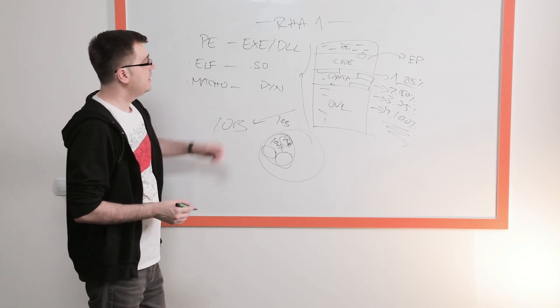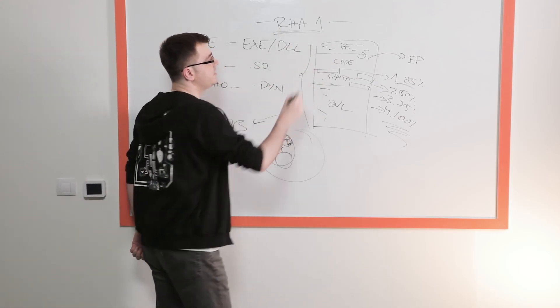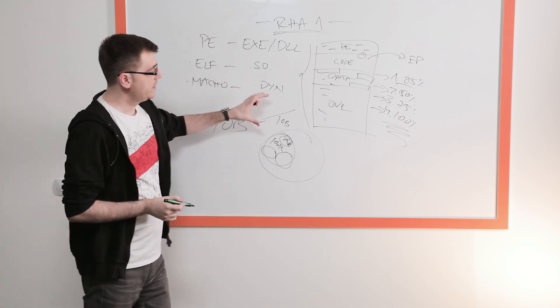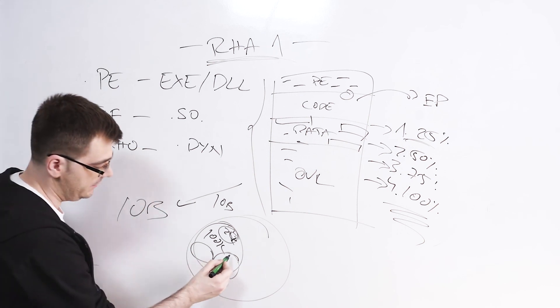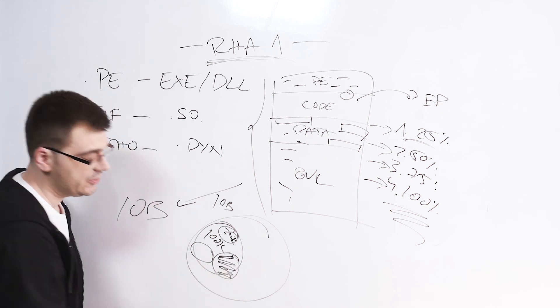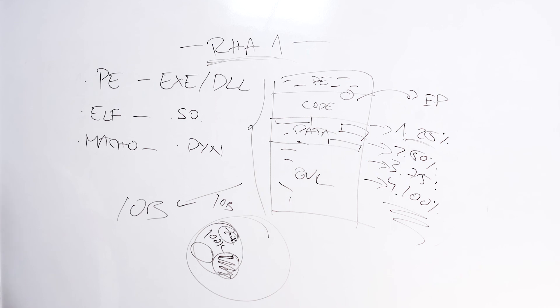So ultimately, RHA1 as a functional similarity algorithm is used to group binaries into buckets. And only if the buckets themselves are exclusively malicious can we use this algorithm to also do classification.